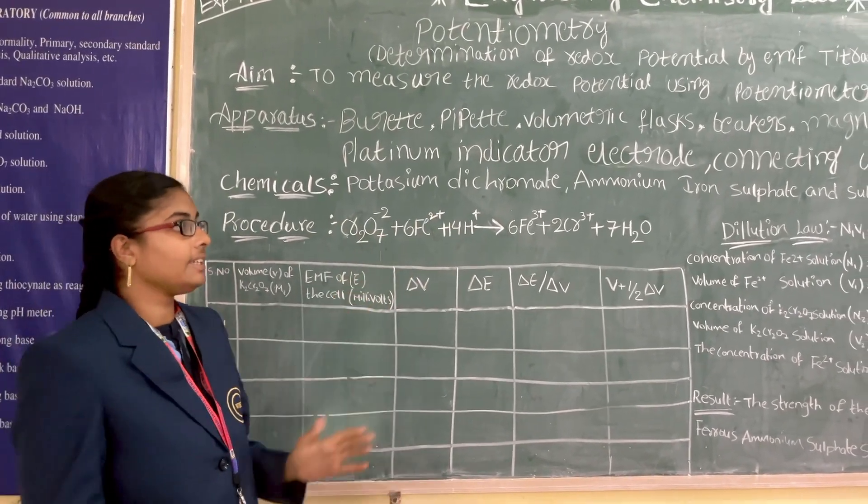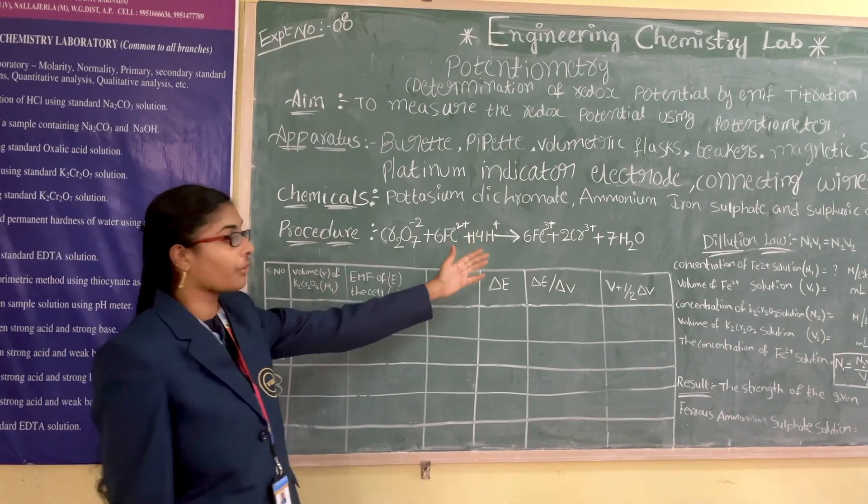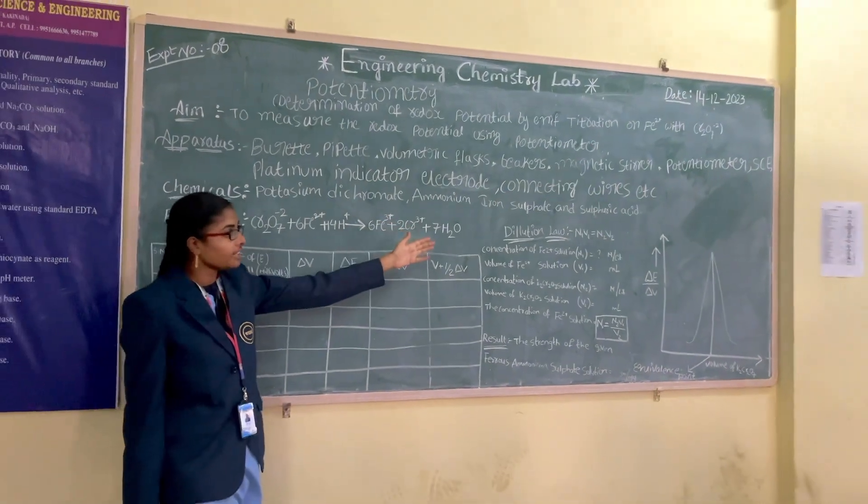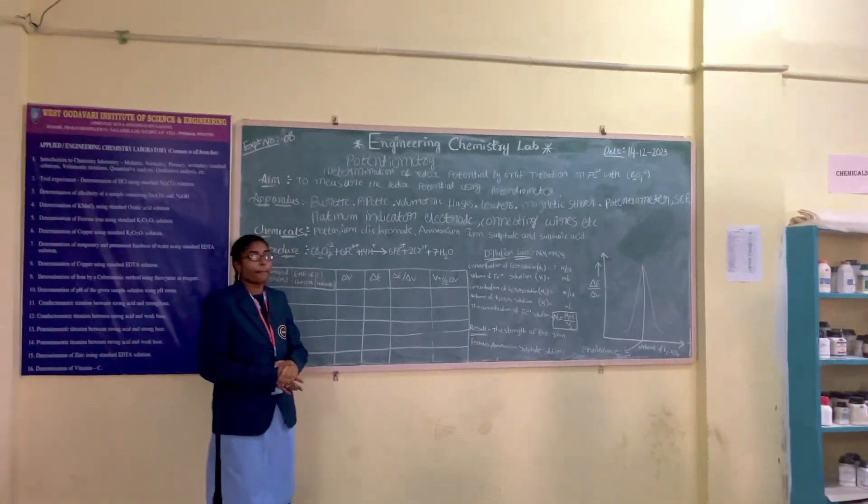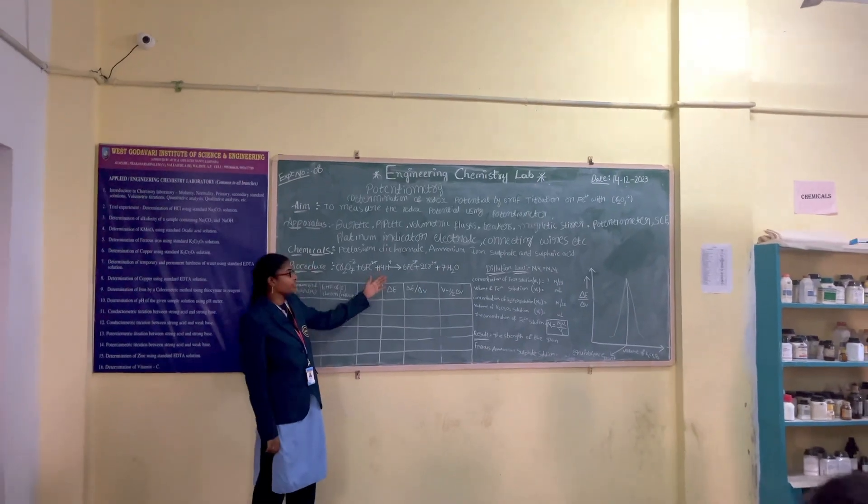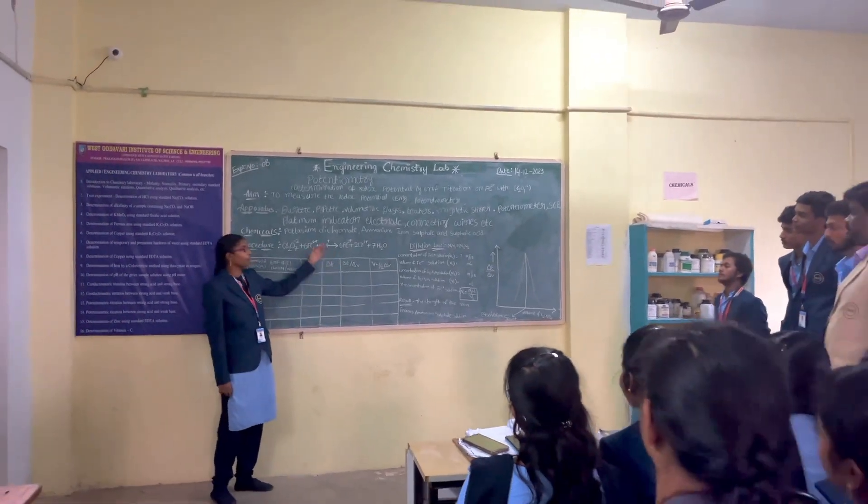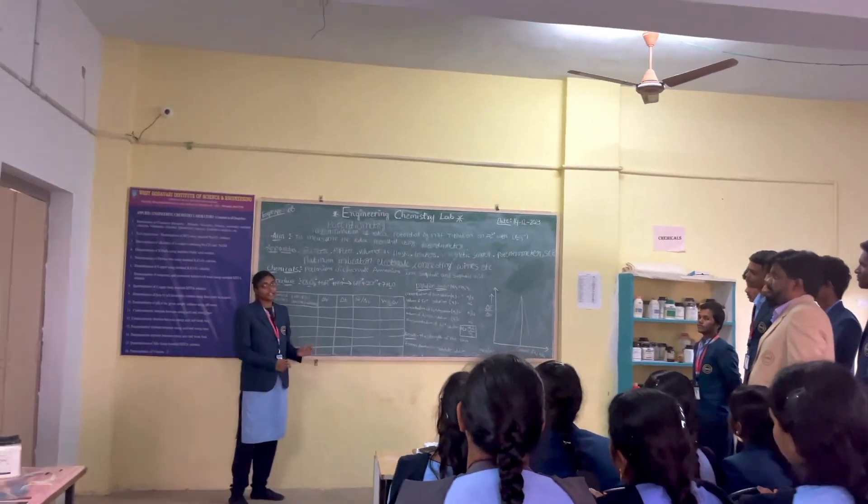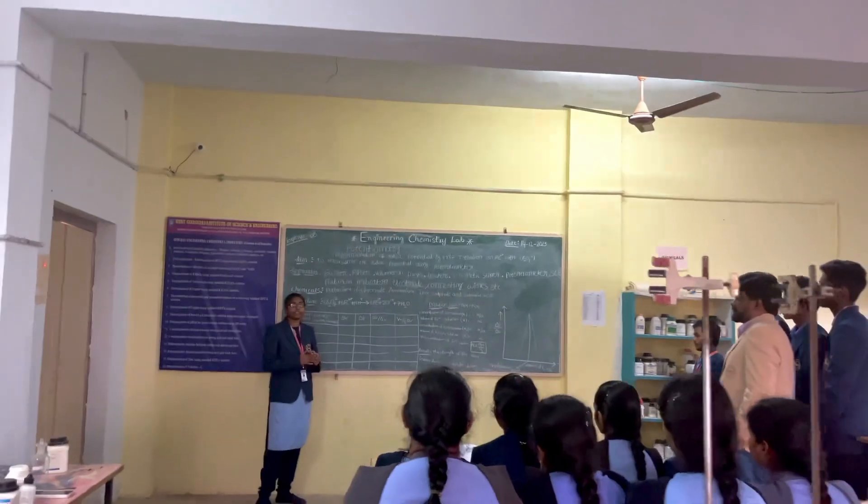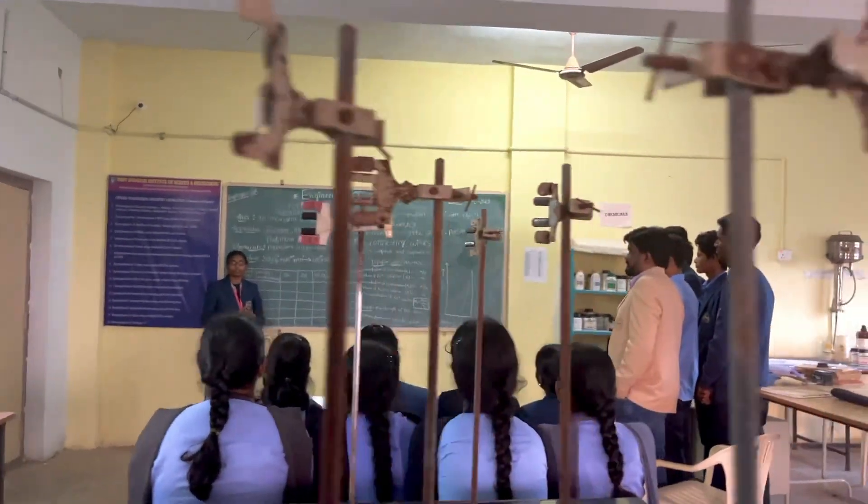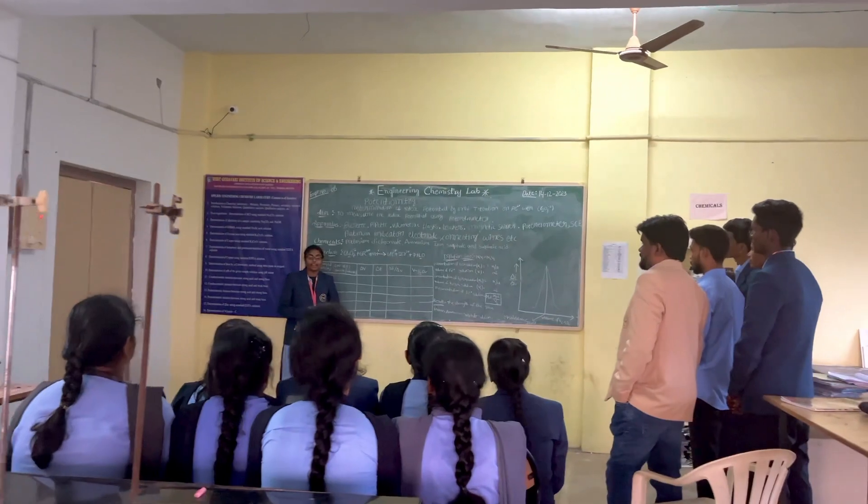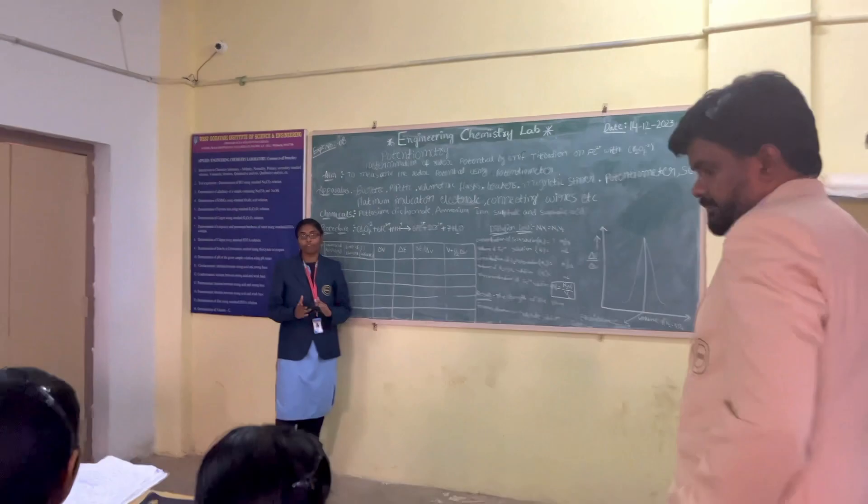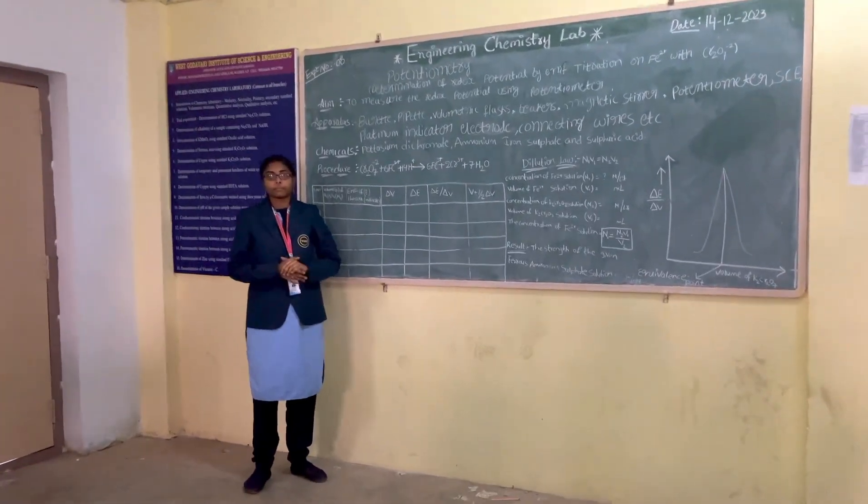Take sufficient amount of dichromate solution to prepare the ammonium iron sulphate and sulfuric acid. Add 2.5 cubic cm of potassium dichromate, 25 cubic cm of H2SO4, and 45 cubic cm of distilled dilute H2SO4, and 50 cubic cm of dilute distilled water.